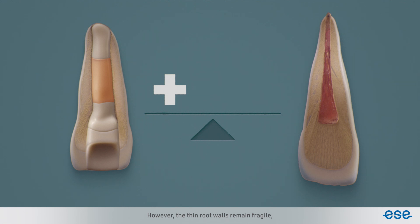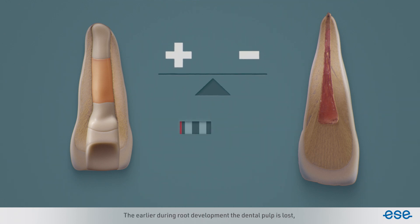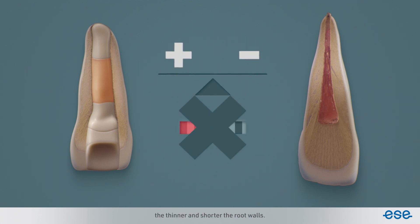However, the thin root walls remain fragile, which leaves the tooth prone to fracture. The earlier during root development the dental pulp is lost, the thinner and shorter the root walls.